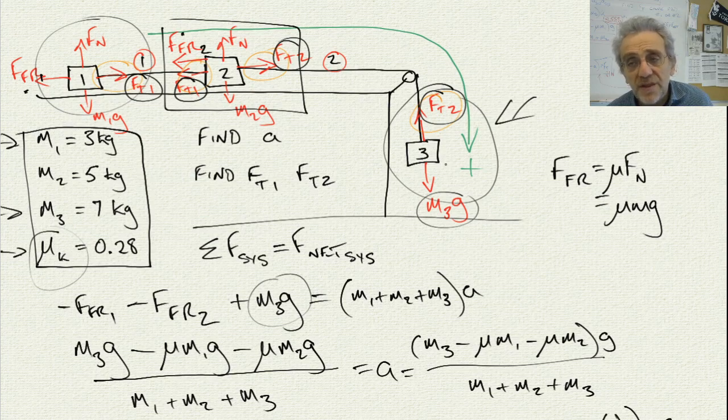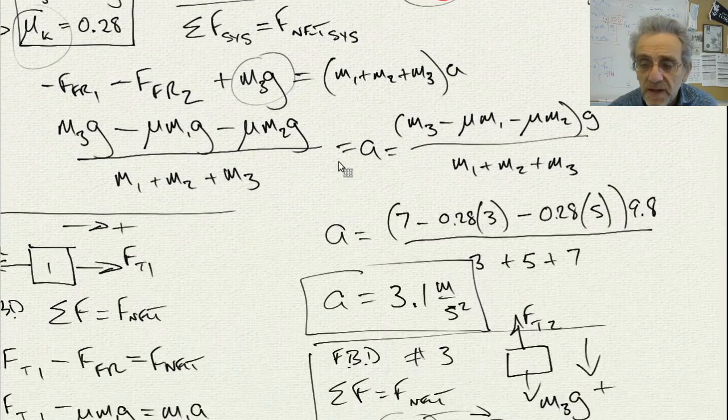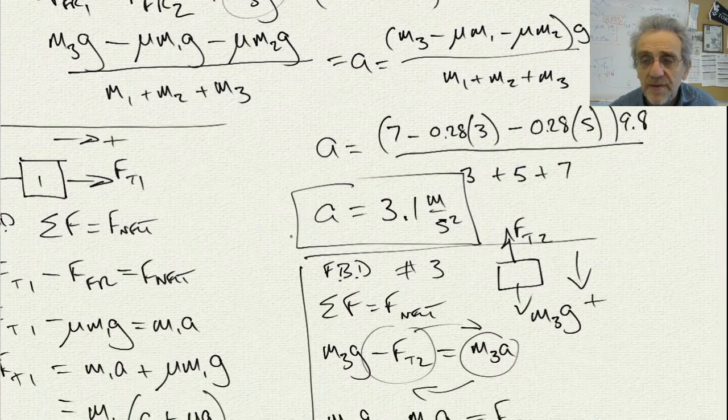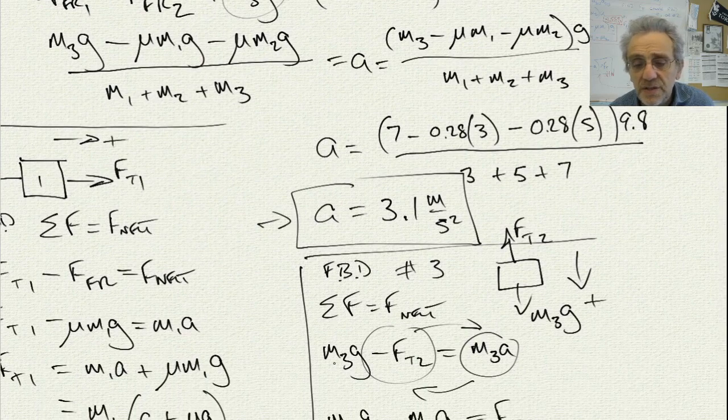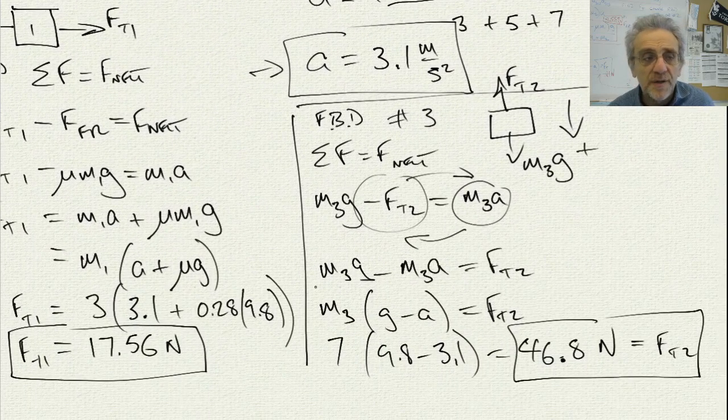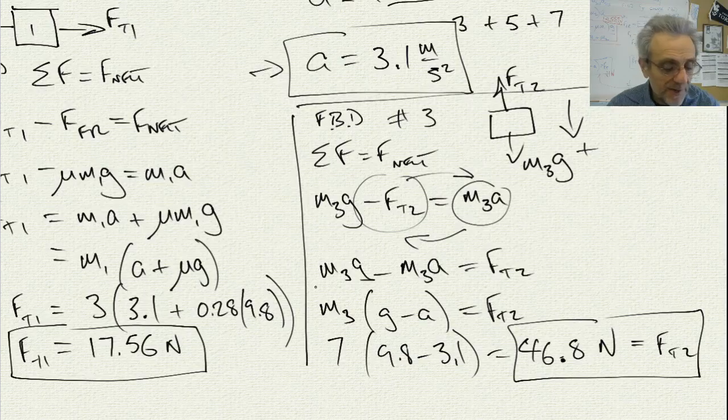So we know that the third mass must be pulling down hard enough to be, with gravity, to be moving the top two masses to the right. So that's the end of this question. And we were able to get the acceleration and the tensions on both ropes. Thanks for watching.